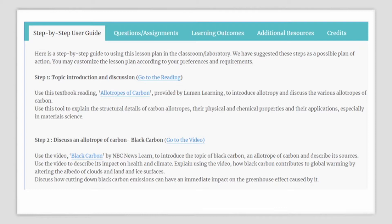Next, use a short micro lecture titled Black Carbon, produced by NBC News Learn, to introduce to your students what black carbon is — which is an allotrope of carbon. In this micro lecture, you can have your students understand what might be its sources. This video can also be used to describe the impact of black carbon on health and Earth's climate. You can stress to your students how black carbon contributes to global warming by altering the albedo of both clouds, land, and ice surfaces. Discuss with your students how cutting down these emissions can have an immediate impact on the greenhouse effect caused by it.